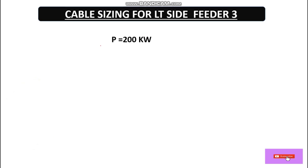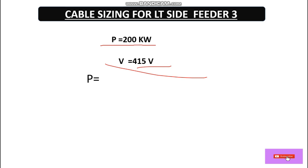For this 200 kilowatt load, the voltage is 415 volts three-phase. The formula is: P = √3 × V × I × cosφ, where V is the line voltage, I is the full load current, and cosφ is the power factor.